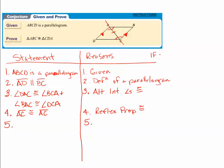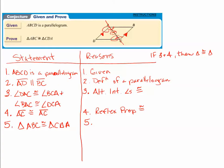The last step: if we know statements three and four — the congruent angles and the congruent shared side — then we know that triangle ABC is congruent to triangle CDA. Looking at the drawing, we have angle-side-angle that are corresponding, which proves that the triangles are congruent by the ASA postulate.